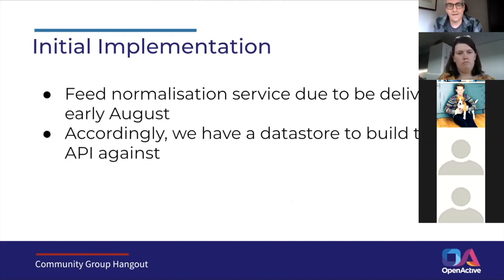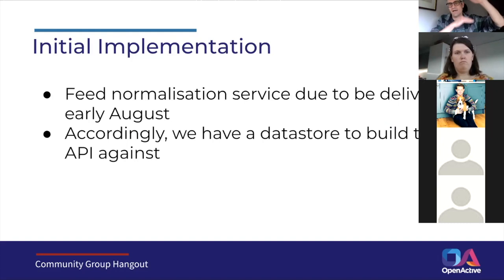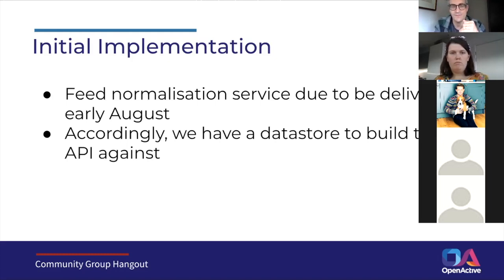There's also the fact that we'll be getting a feed normalization service delivered in the first couple of weeks of August. Open Data Services are currently building a harvester that goes around to all of the sites listed on the status page, harvests, and then republishes in a normalized form — basically flattening the various hierarchies used to represent data into a flat representation of entity types that are bookable, so events and slots and that kind of thing.